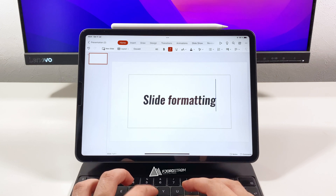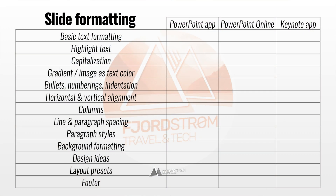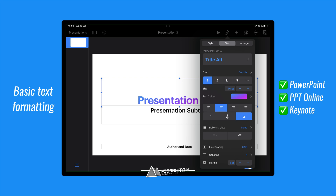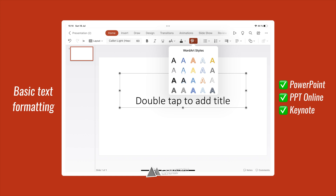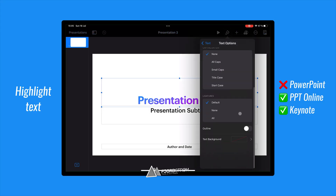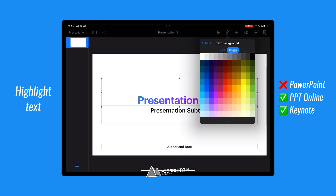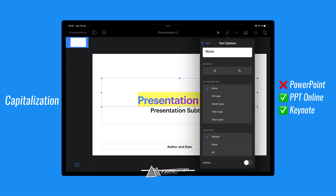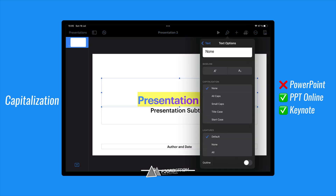Let's first start with slide formatting. When it comes to text formatting, of course the basics are there: bold, italics, underlined, strikethrough, text color and word art styles in PowerPoint. In Keynote you can also highlight words. Keynote has additional options: capitalization, text outline, and you can even choose an image or gradient as a text color.